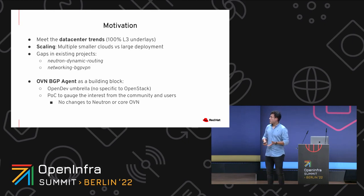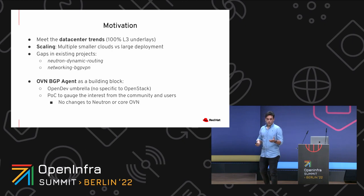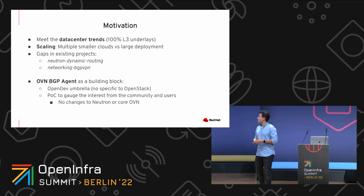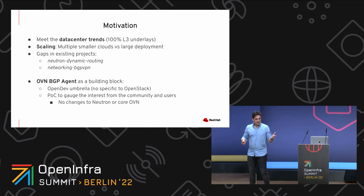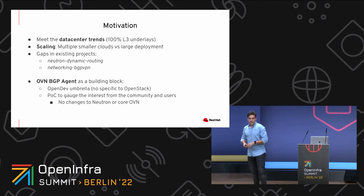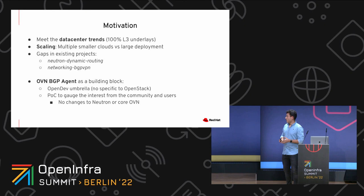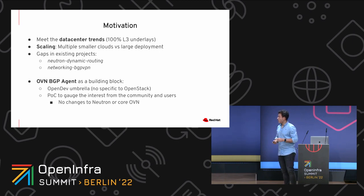We explored what is available upstream. There are two main projects: Neutron dynamic routing and networking BGP VPN. There were some gaps we wanted to close. So we decided to start a new project — a building block that could be integrated into those two projects. We open-sourced it under the OpenDev umbrella. The premise was to not be intrusive to any existing projects — no changes to Neutron or OVN — minimally invasive, with some gaps and limitations, serving as a functional block for what is coming next.